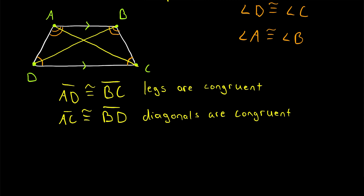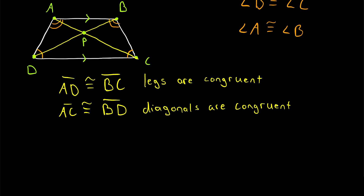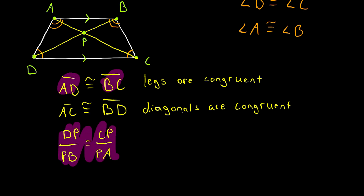Another property is not only are the diagonals congruent, but they also cut each other proportionally. If the two diagonals intersect at point P, the ratio of segment DP to segment PB is the same as the ratio of segment CP to PA. So DP to PB equals CP to PA.